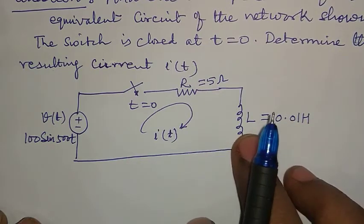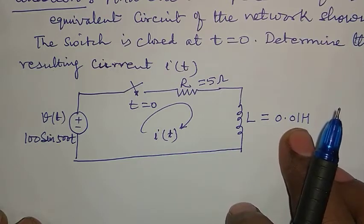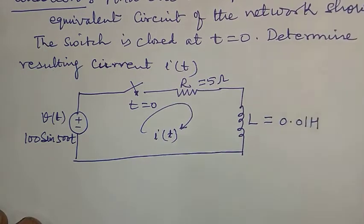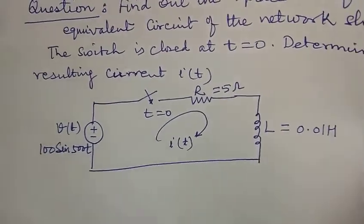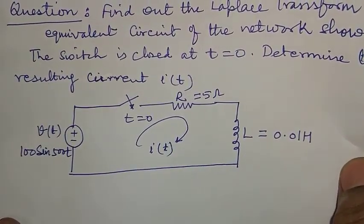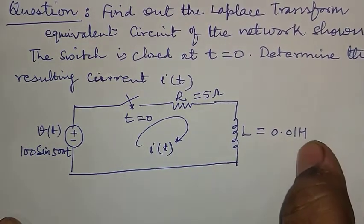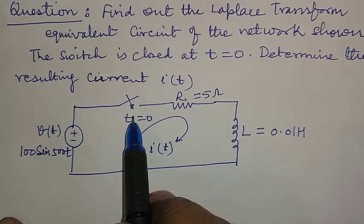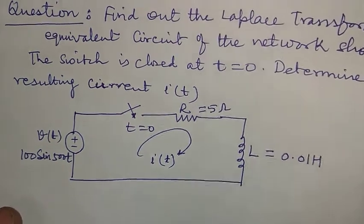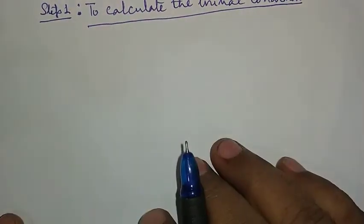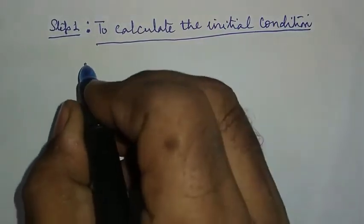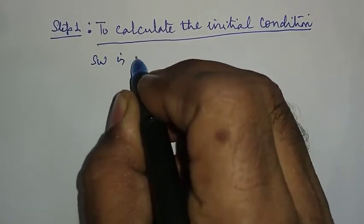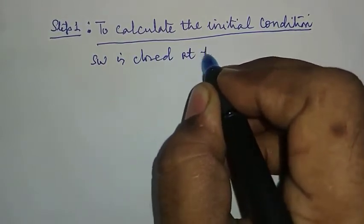In this circuit, only the inductor is the energy storing element. We know that inductor and capacitor are energy storing elements. Therefore, initial conditions of energy storing elements are calculated. Since this circuit consists of only an inductor of 0.01 Henry, the initial condition of this inductor is calculated. The circuit says that the switch is closed at t equal to 0.